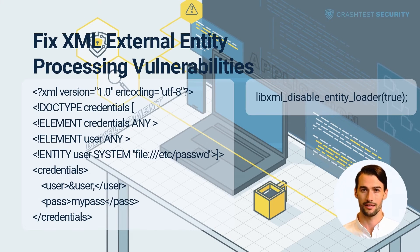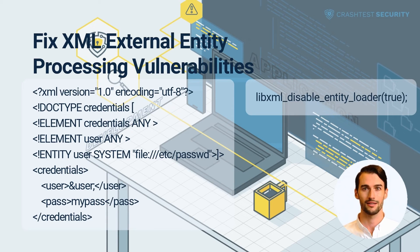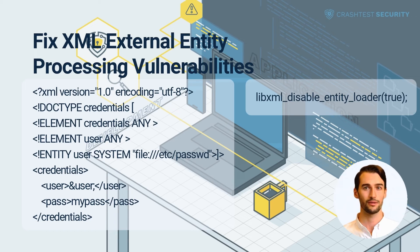An XXE vulnerability exists when a web application parses XML documents from an untrusted source. If the underlying XML parser accepts DTD, an attacker can manipulate the XML document to read files on the system. For example, the code snippet on the left shows a malicious XML document that forces the application to read sensitive files on the server. A poorly configured XML parser would read the file specified in the DTD and possibly display it to the attacker.